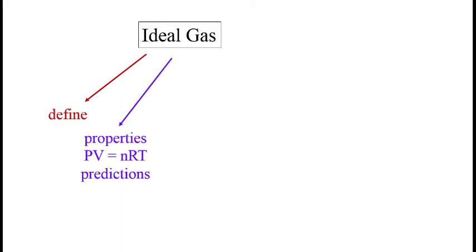Next, we'll talk about the properties of a gas and how they relate to one another. This results in the familiar ideal gas law, PV equals nRT. This will allow us to make predictions about how the properties respond to one another, both qualitatively and quantitatively.